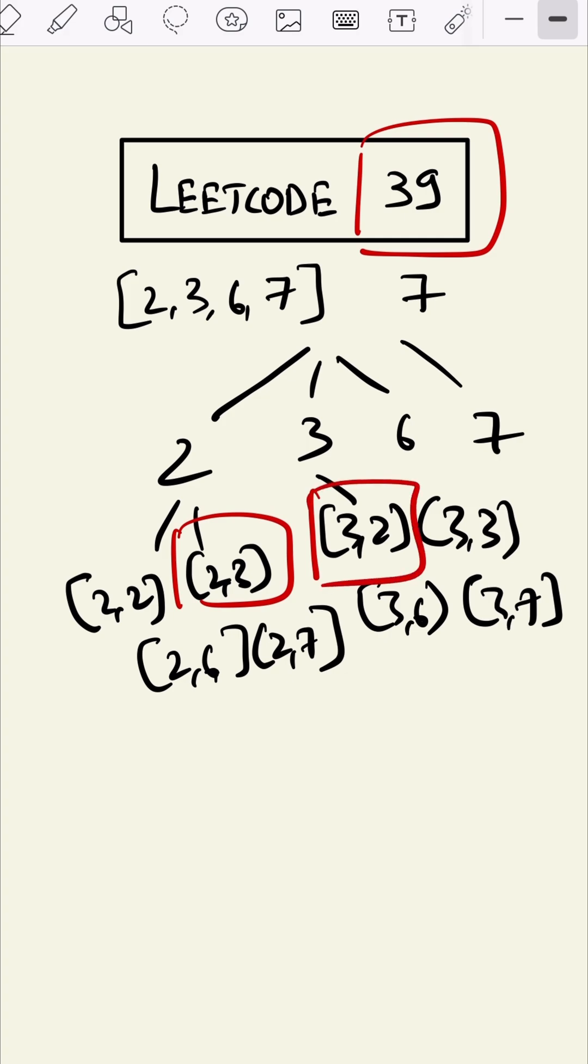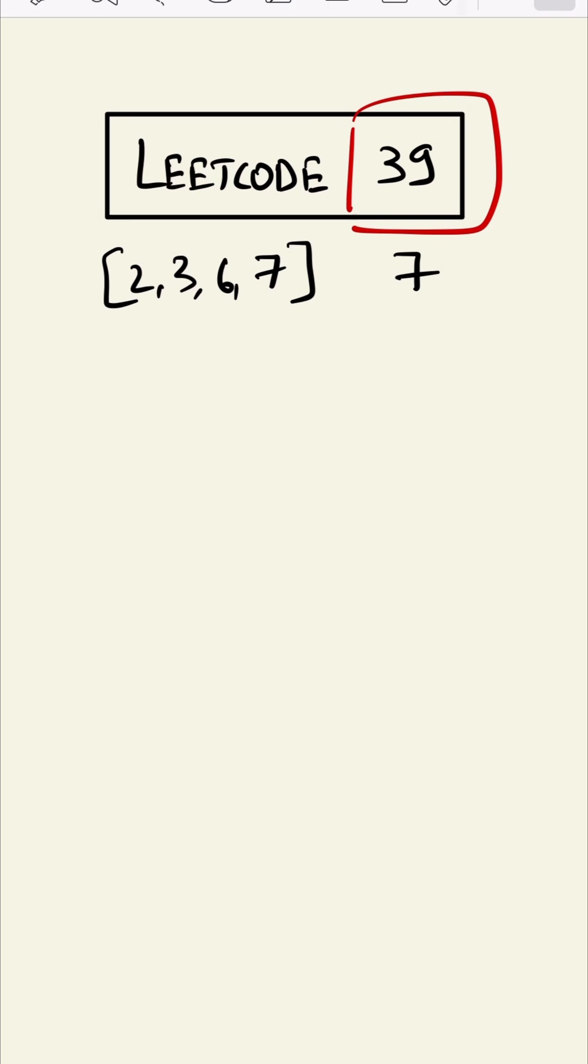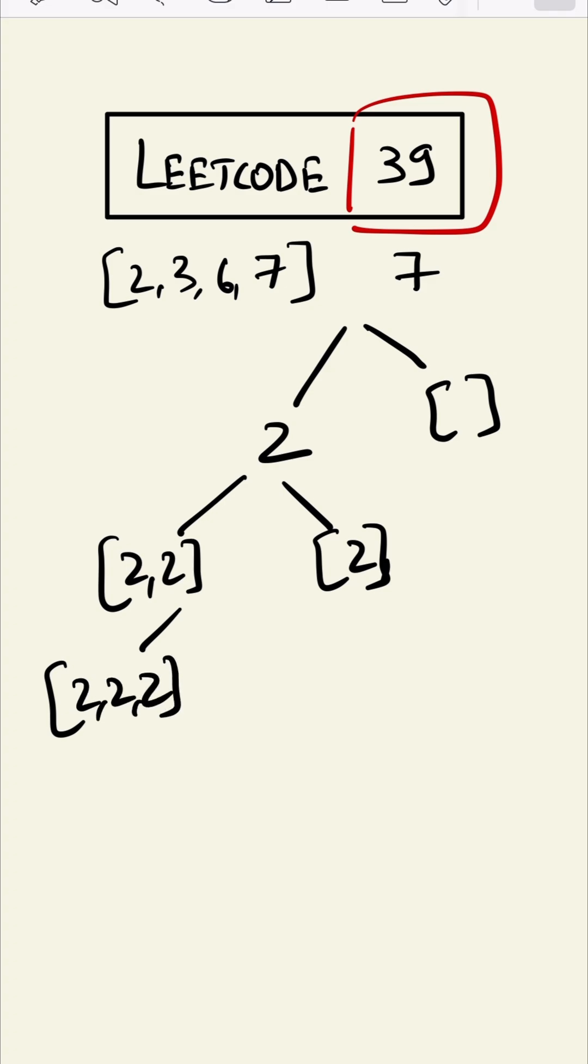What we can do is we can take two paths, one containing that number and other not containing it. For example, let's say this path contains two, so this path will not contain the two. Now again, this path will contain two twos and this path will only contain one two. Again, this path will contain three twos and this path will only contain two twos.